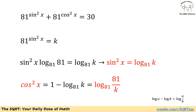To solve this problem I'm going to start with using k for the first term. If we use k for 81 to the power of sine squared of x, then we are going to find what we can have for the second term. Let's start with k equals to 81 to the power of sine squared of x. I'm going to take a log of both sides in base 81, because we want to remove 81 from the power.